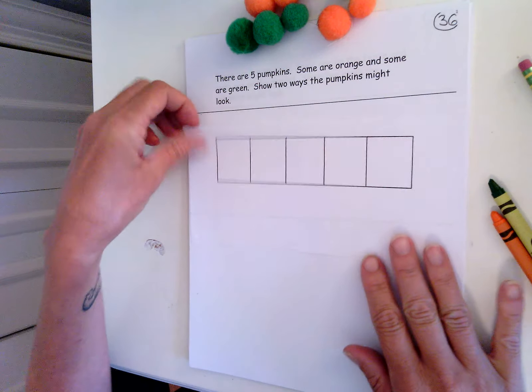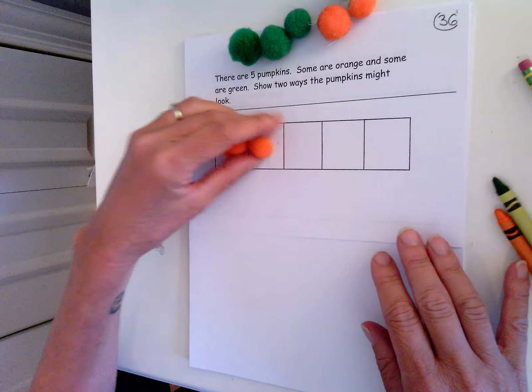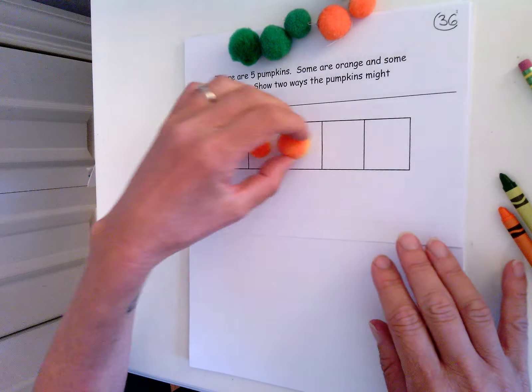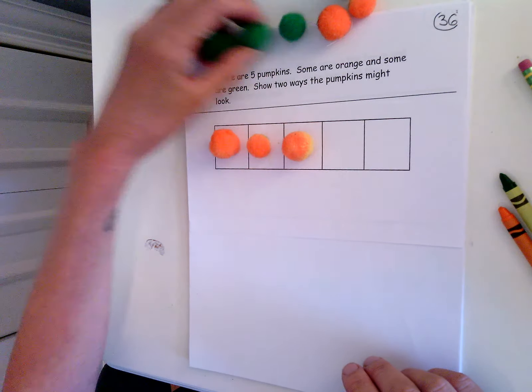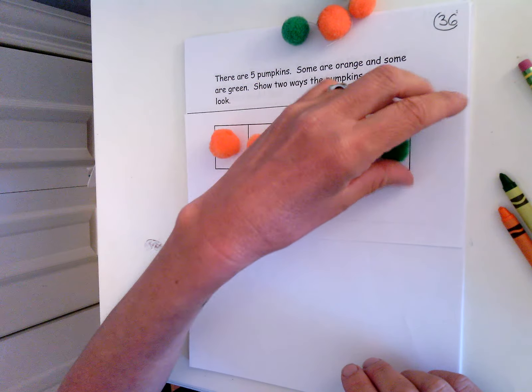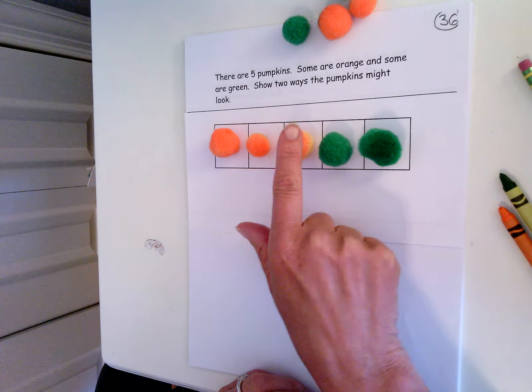So I could use my fives frame and I could put some orange on, and then the rest would be green. Do I have five pumpkins? Let's count. One, two, three, four, five. I do.